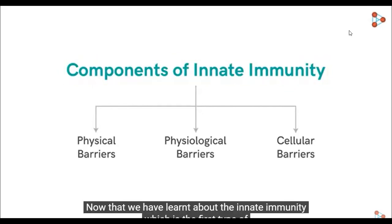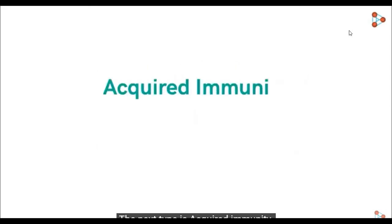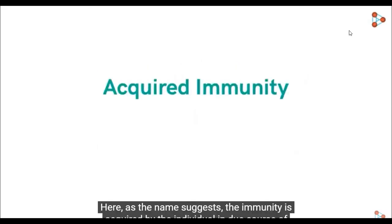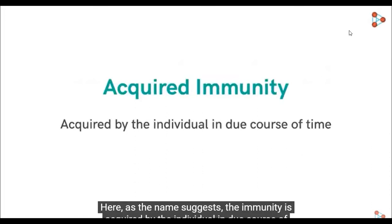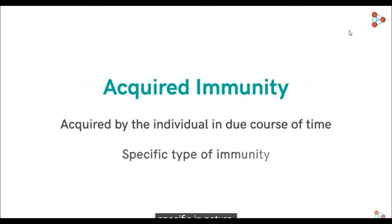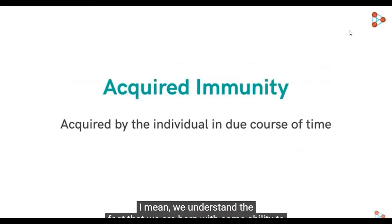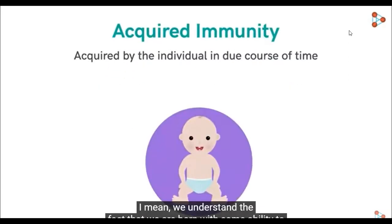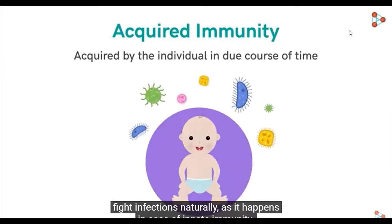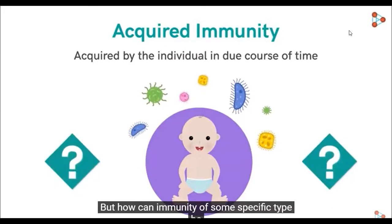Now that we've learned about innate immunity, which is the first type, let's move ahead to the second type. The next type is acquired immunity. As the name suggests, the immunity is acquired by the individual in due course of time. It's a type of immunity which is developed over a period of time and is of a highly specific nature. How does immunity develop gradually over time? We understand that we're born with some ability to fight infections naturally, as happens in innate immunity. But how can immunity of some specific type be developed?